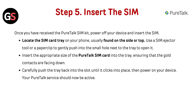Step 5: Insert the SIM. Once you have received the PureTalk SIM kit, power off your device and insert the SIM. Locate the SIM card tray on your phone, usually found on the side or top. Use a SIM ejector tool or a paperclip to gently push into the small hole next to the tray to open it. Insert the appropriate size PureTalk SIM card into the tray, ensuring the gold contacts are facing down. Carefully push the tray back into the slot until it clicks into place, then power on your device. Your PureTalk service should now be activated.